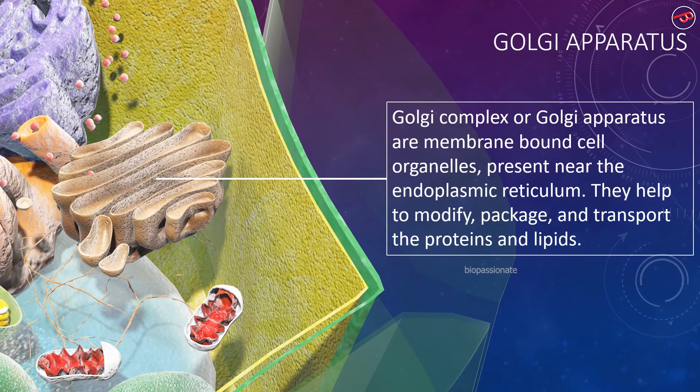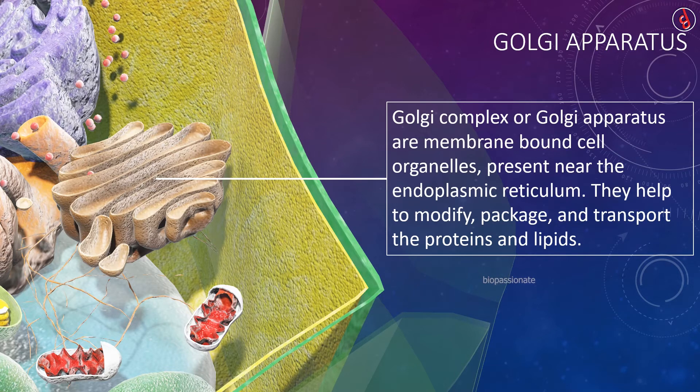Golgi apparatus or Golgi complex are membrane-bound cell organelles present near the endoplasmic reticulum. They help to modify, package and transport the proteins and lipids.